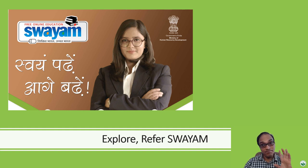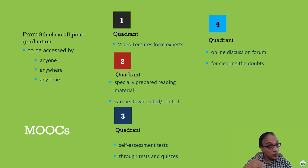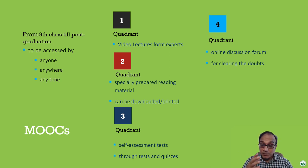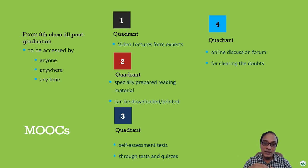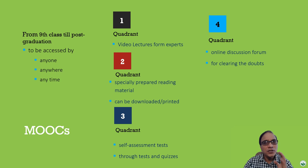We need to explore and refer SWAM. In SWAM, there are online courses available from class 9 to 12, post-graduate to research students, and it can be accessed by anyone, anywhere, anytime. There are four quadrants: Quadrant 1 has video lectures from experts; Quadrant 2 has specially prepared reading material and e-contents that can be downloaded; Quadrant 3 has self-assessment tests and quizzes; and Quadrant 4 has an online discussion forum for clearing doubts. It is a wonderful platform — please do avail the facility provided by the Government of India.